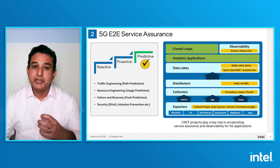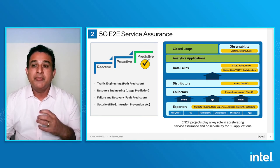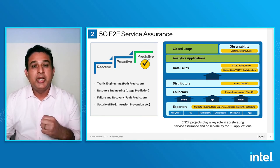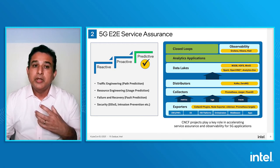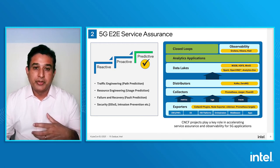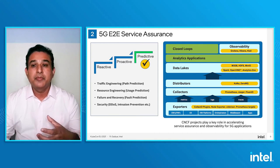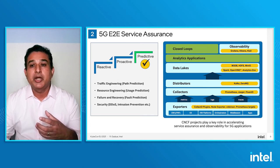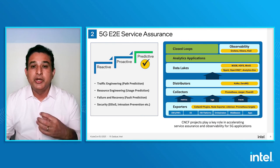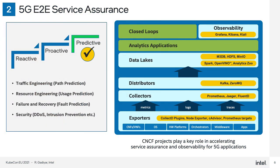Combine these three elements in a Kubernetes environment and you have a really powerful platform with excellent observability data collection. For data distribution, Kafka is a widely adopted cloud-native streaming platform for PubSub events. ZeroMQ is another popular cloud-native message distributor, which is lightweight and can work without a broker. For creating data lakes, MinIO and M3DB are great solutions. M3DB serves as a good cloud-native database for time series data. MinIO is a good cloud-native object store — it's also Prometheus and Grafana friendly.